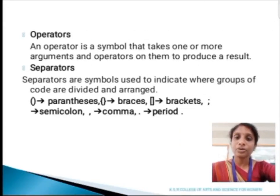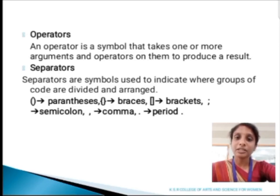Next, we are going to discuss about operators and separators. An operator is used to manipulate data and values. An operator is a symbol that takes one or more arguments and operates on them to produce a result. Separators are symbols used to indicate where groups of code are divided and arranged. Examples: parenthesis, braces, brackets, semicolon, comma and periods.